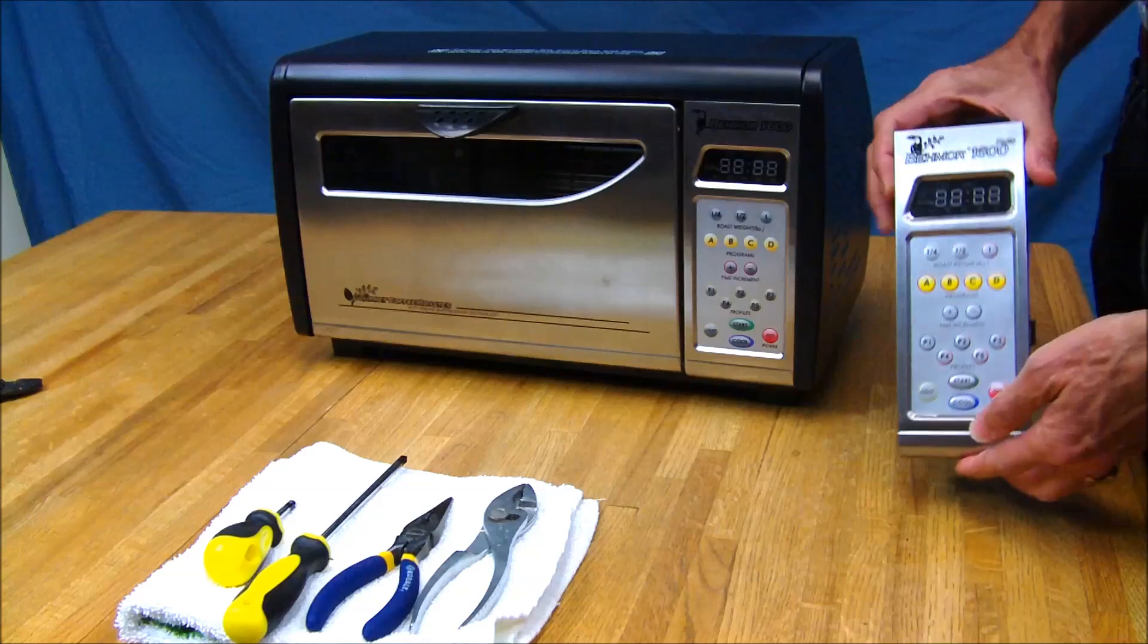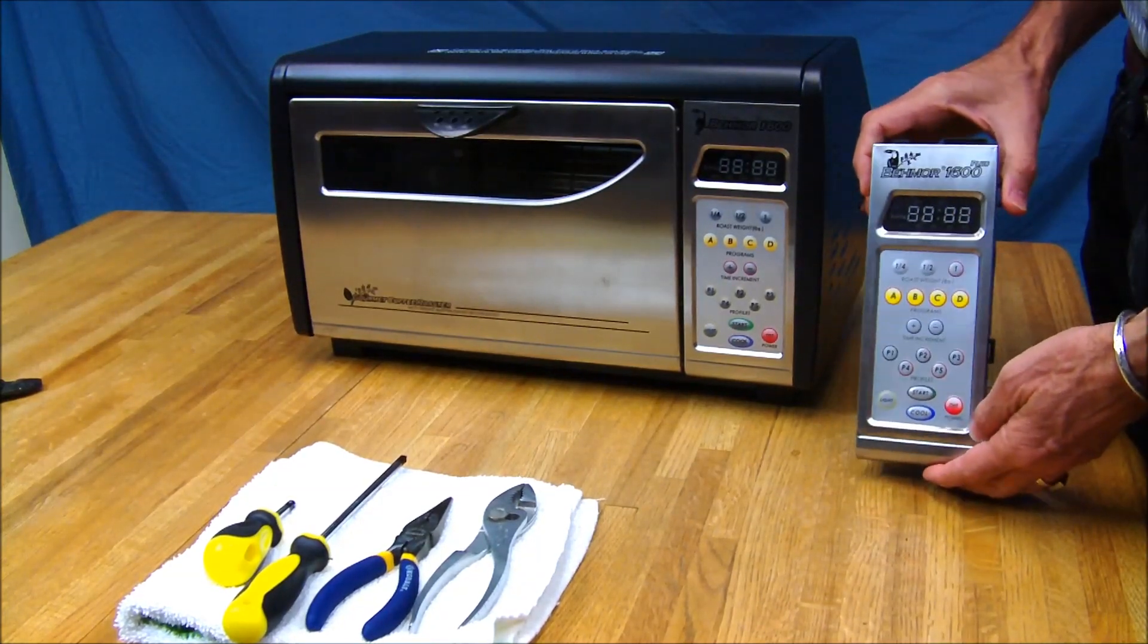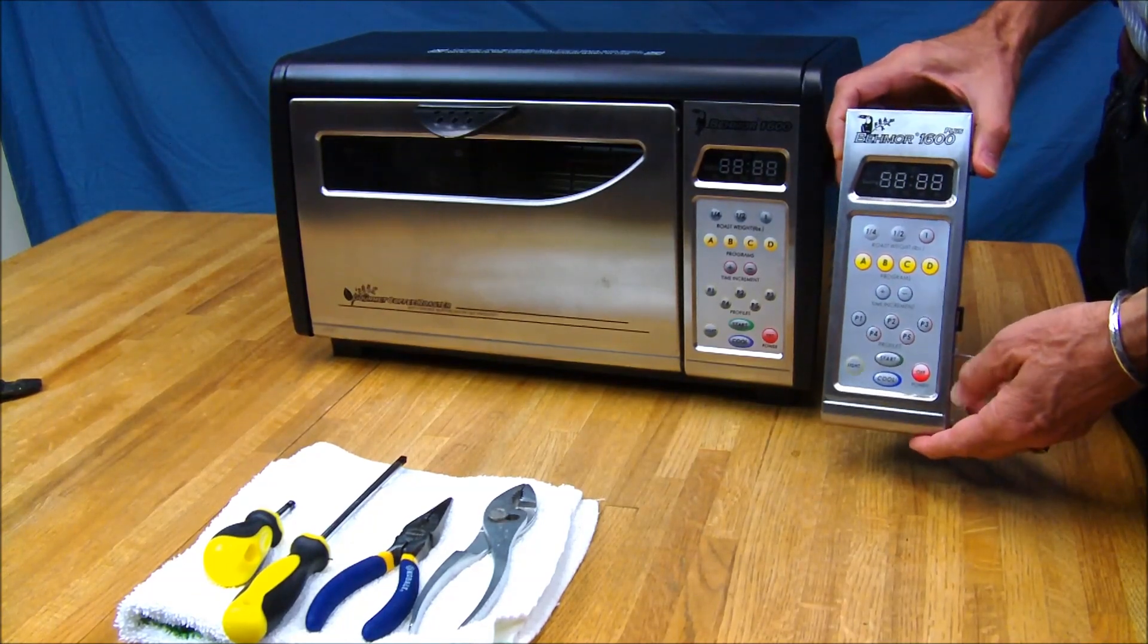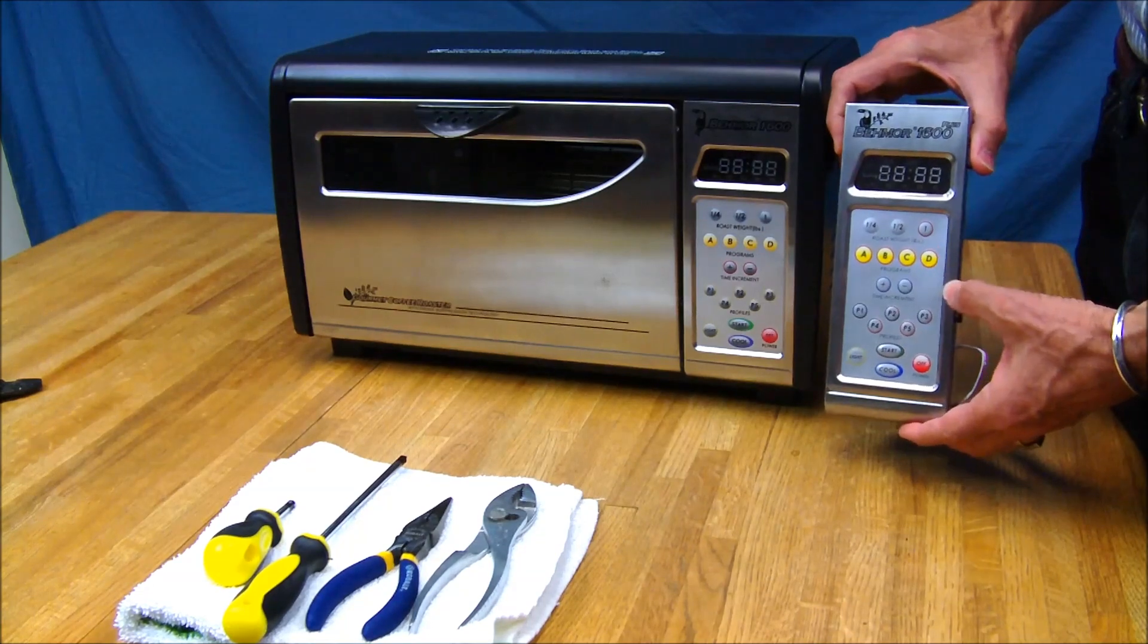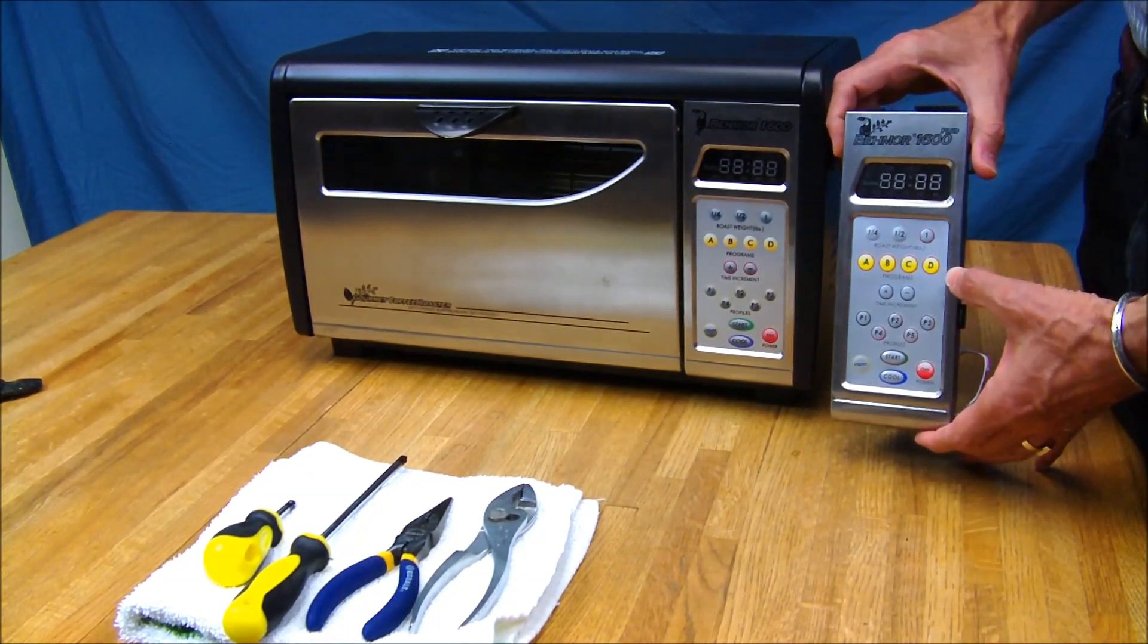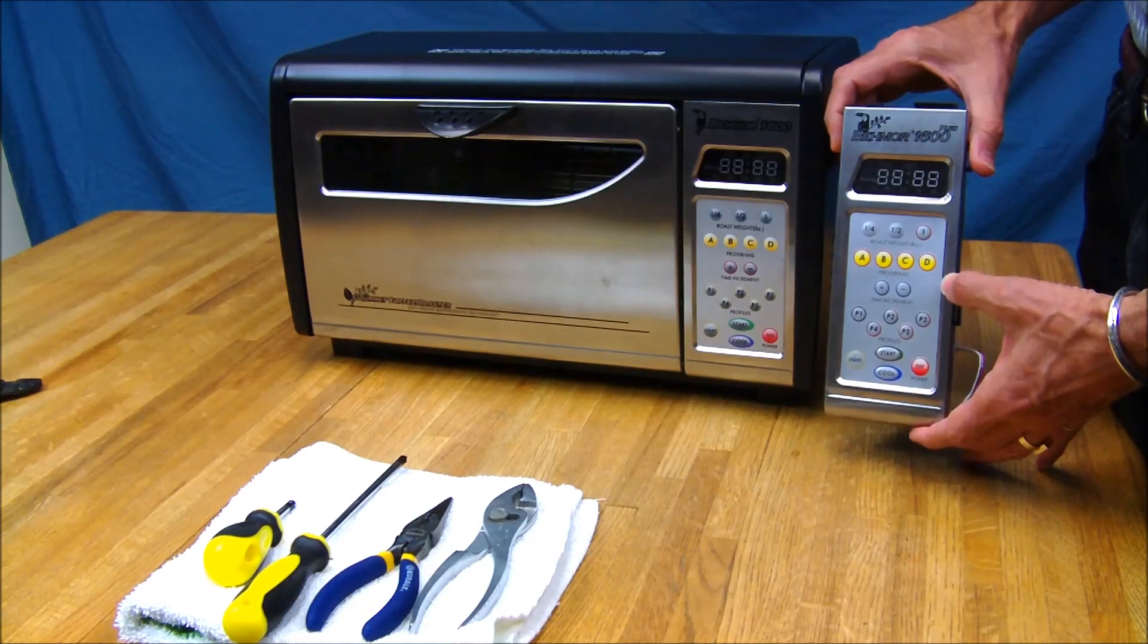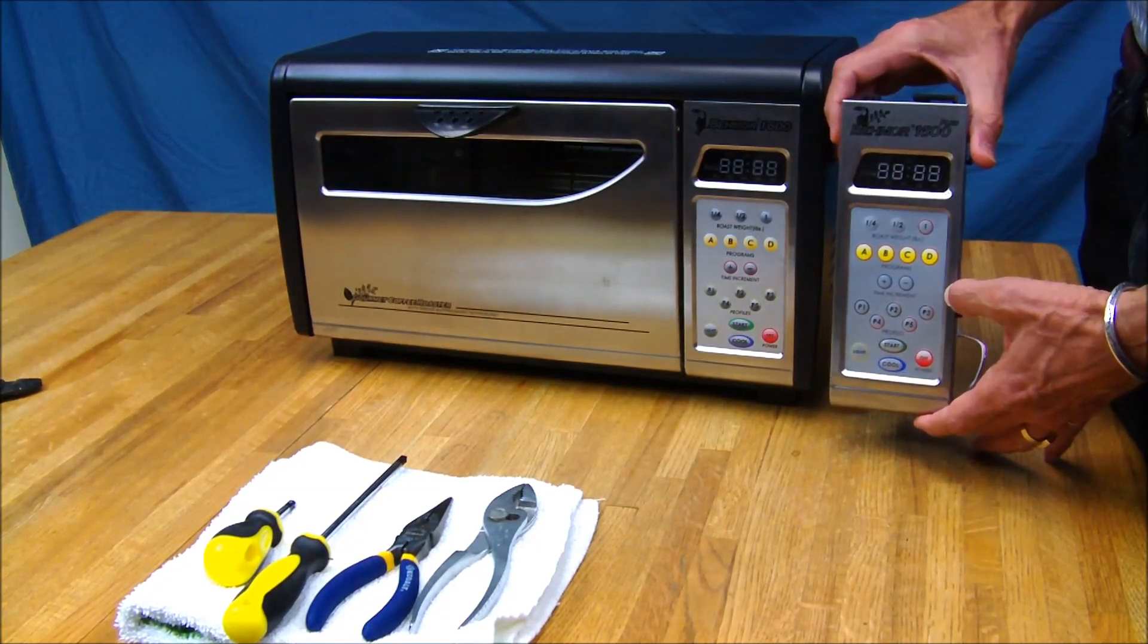We're about to convert the Beamware 1600 roaster into a plus model just by changing out the control panel. The plus has more features than the original one had, adding some manual controls and overrides, temperature sensor readouts, drum speed control, Rosetta Stone, and some other nice features.